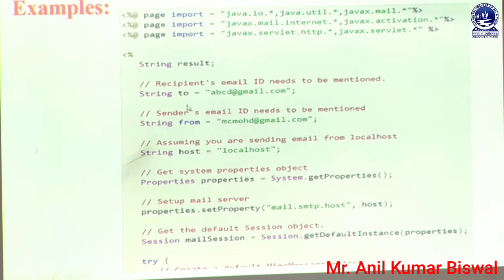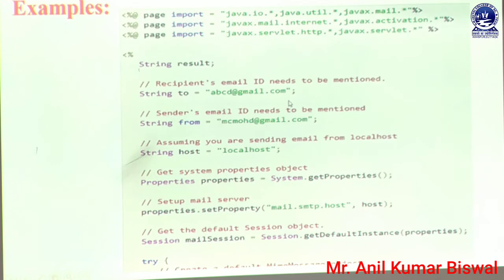Next we define a String variable 'to'. By using that variable we can set the destination address — you can write any mail ID of the person you want to send to. If a sender mail ID also needs to be mentioned, that means I am a sender sending a message from my account to another account; my account mail ID is added in the 'from' part, and the 'to' part contains the destination mail ID address. Next we need to define the host — whether you are using localhost or any other host, that is also mentioned in this part.